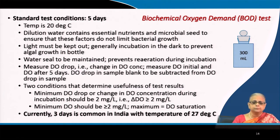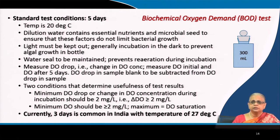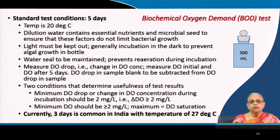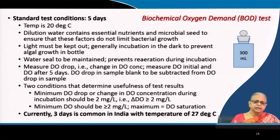The remainder of the 300 ml BOD bottle is filled with dilution water containing all essential inorganic materials. The test is designed to be carbon-limiting only. All other inorganic nutrients — nitrogen, phosphorus, sulphur, iron, calcium, magnesium, manganese — must be in surplus to ensure none of these micronutrients limit bacterial growth, so only the carbon-containing substrate is the limiting nutrient.